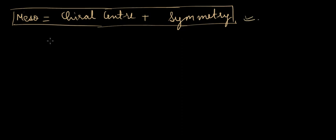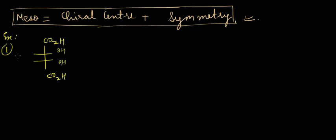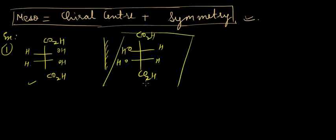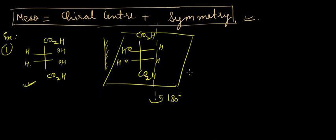Let us draw some examples. We have a compound with CO₂H, OH, and H groups. The mirror image of this compound is also identical to the original image because if you rotate it 180 degrees using the perpendicular axis in the same plane, it is clearly superimposable on the first image — hence identical.